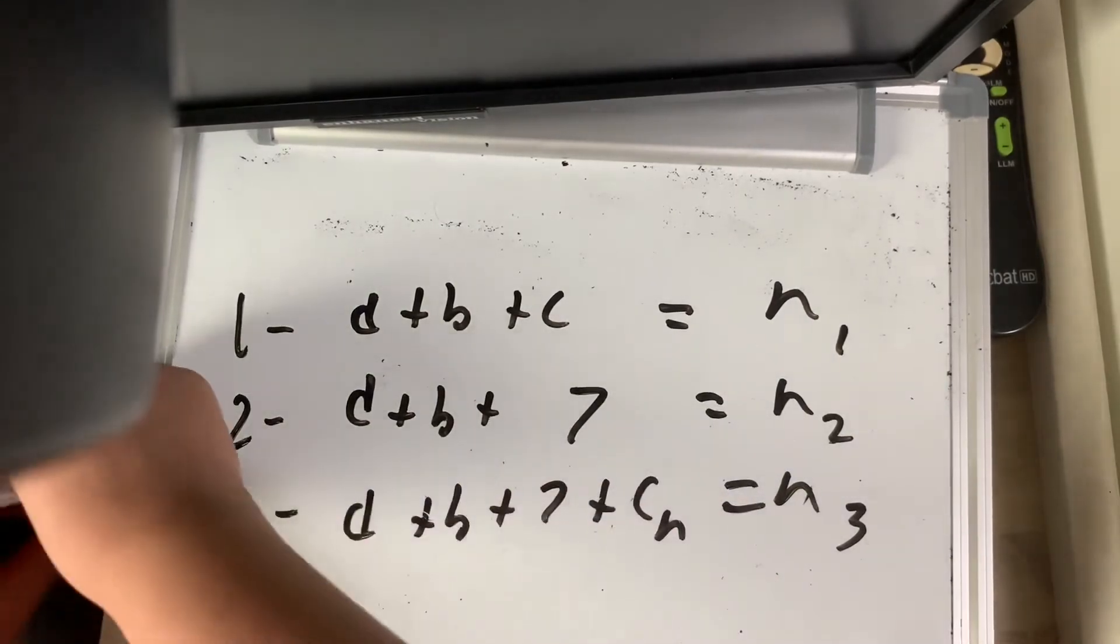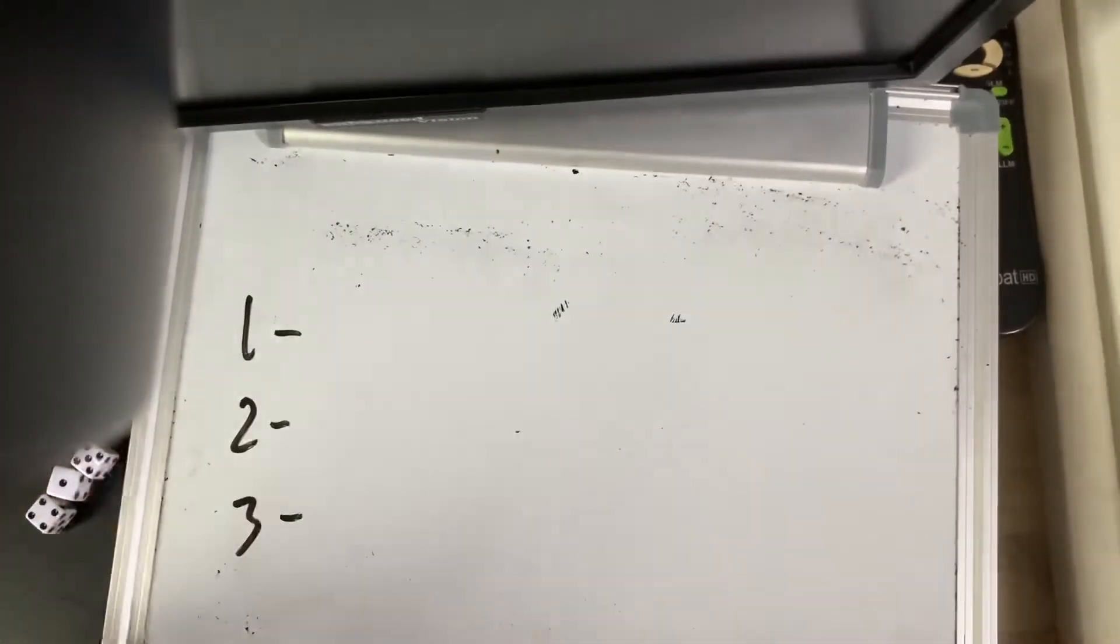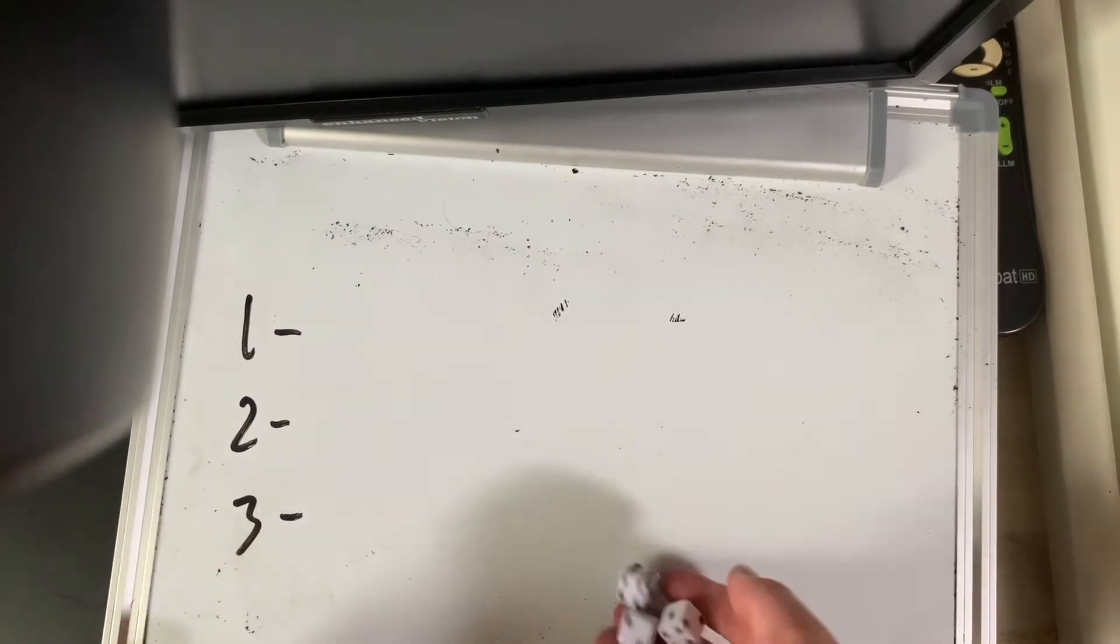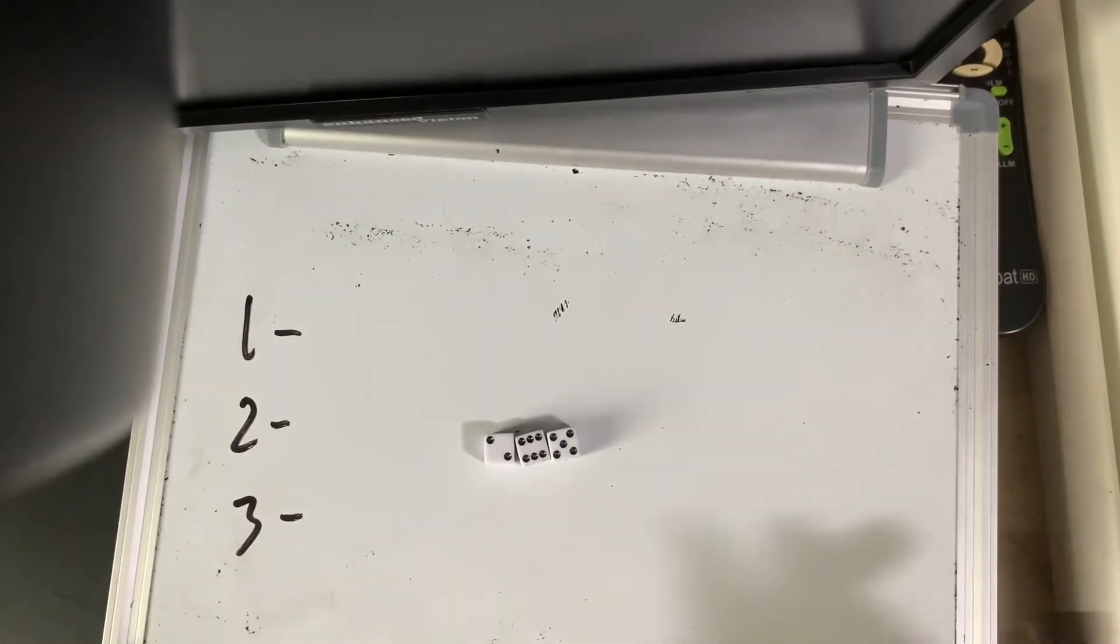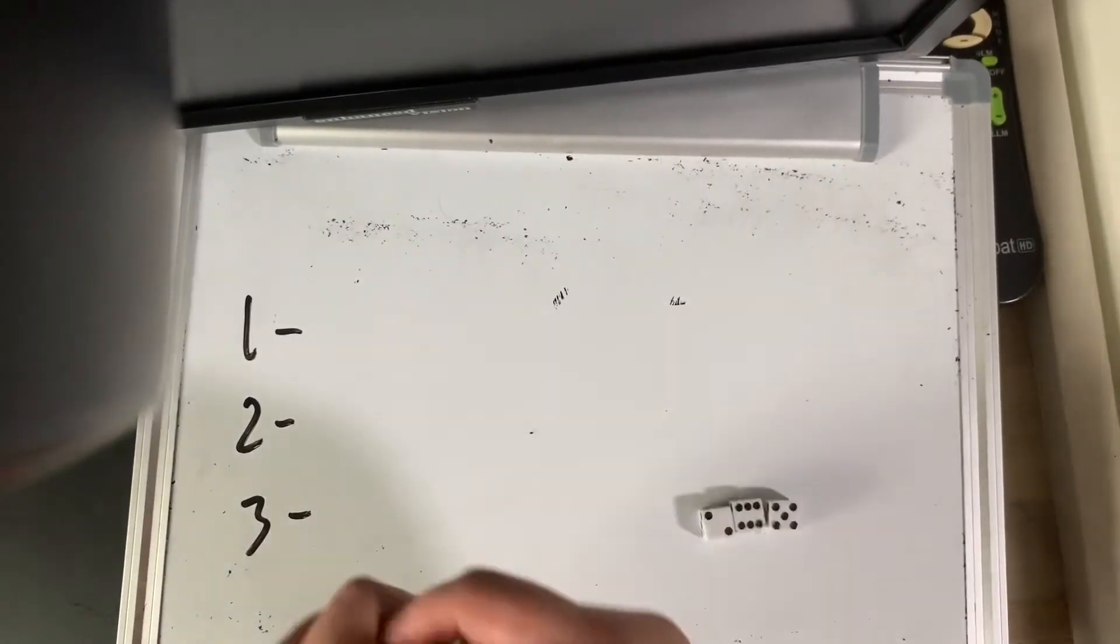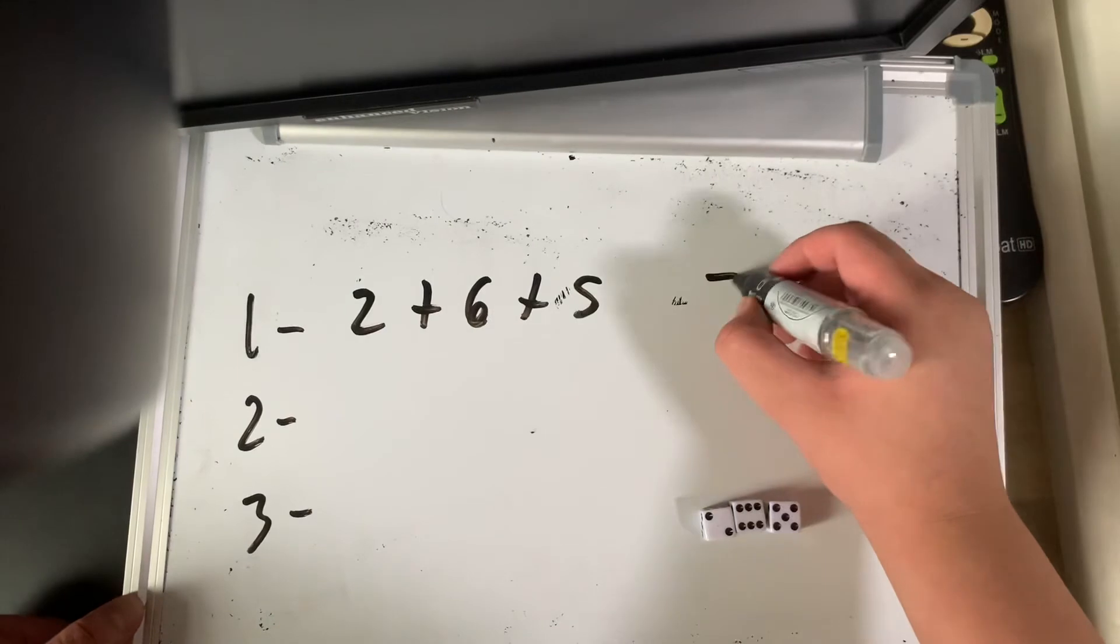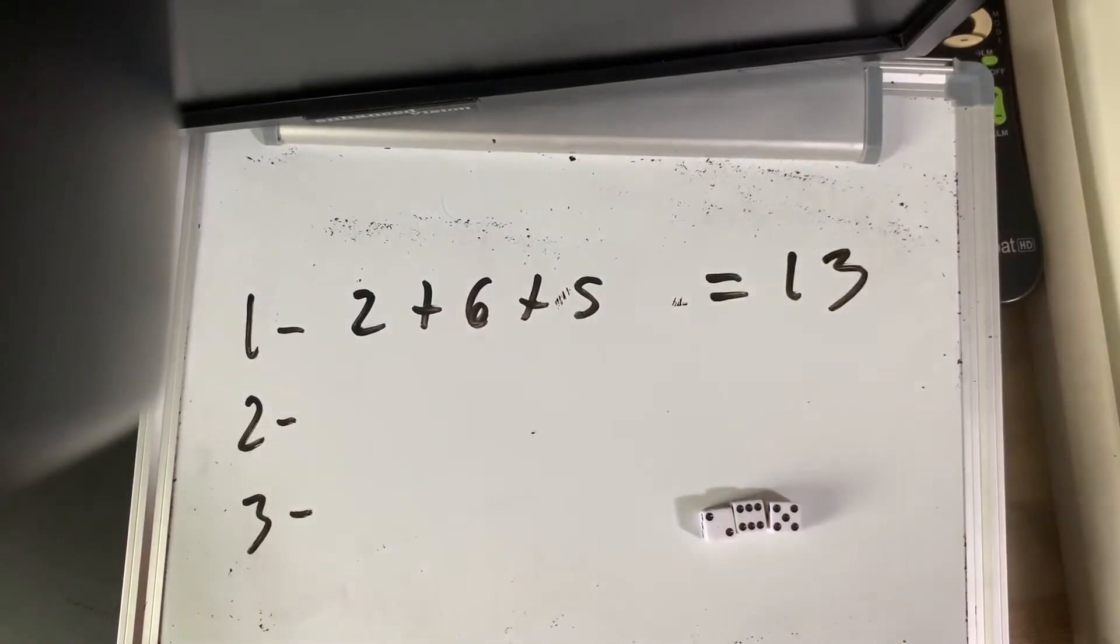You want to see just one more time how this works? Let me try a new set of numbers. So over here you can see 2, 6, and 5. 2 plus 6 plus 5, which equals 2, 7 plus 6, 13.